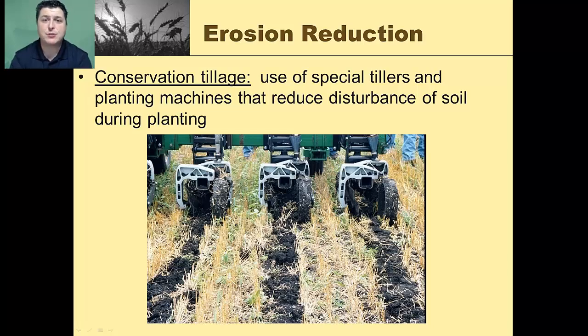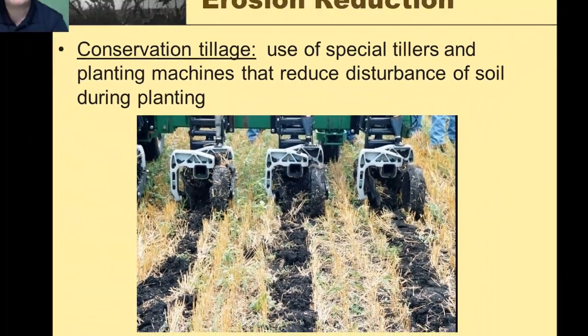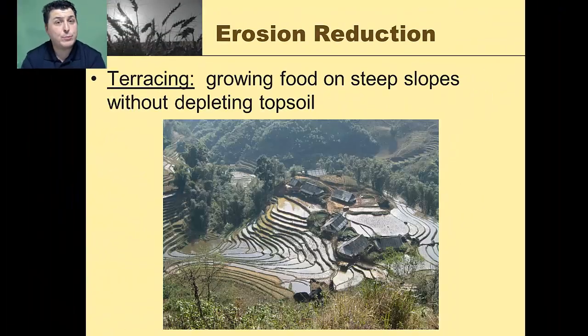There are many farming techniques that allow us to reduce erosion and maintain soil quality. One technique is conservation tillage, where we use special tillers and planting machines that reduce the disturbance of the soil during planting so that we're only disturbing the soil where we're going to plant our seeds.